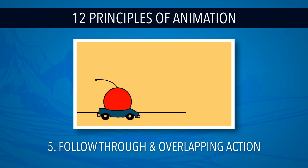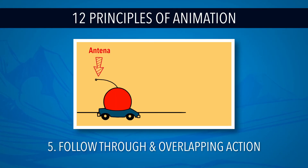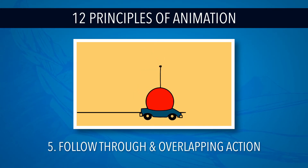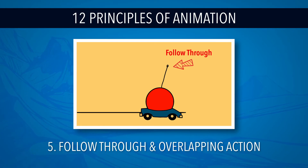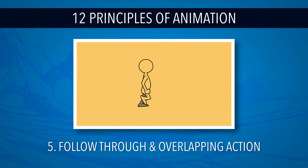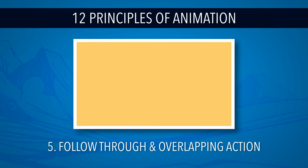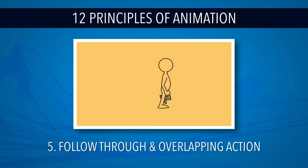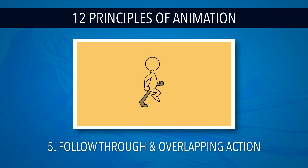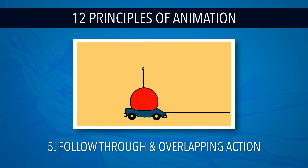Follow through means that loosely tied parts of a body should continue moving after the character has stopped, and the part should keep moving beyond the point where the character stopped. Overlapping action is the tendency for parts of the body to move at different rates. An arm will move differently than the head, and so on.